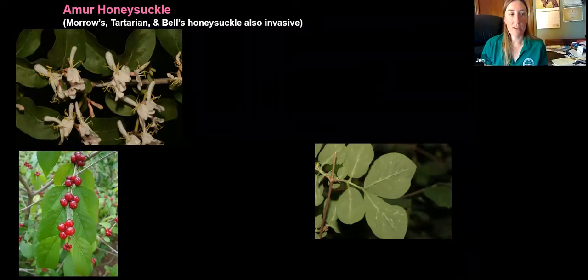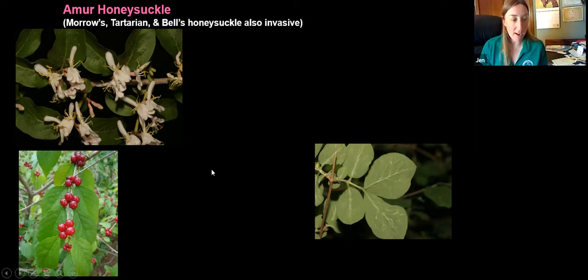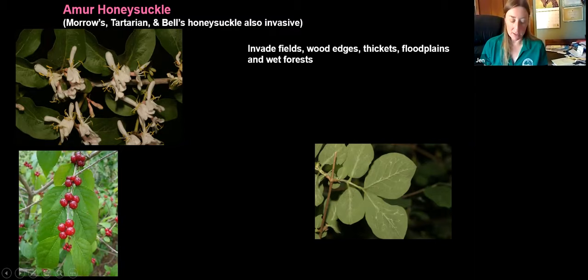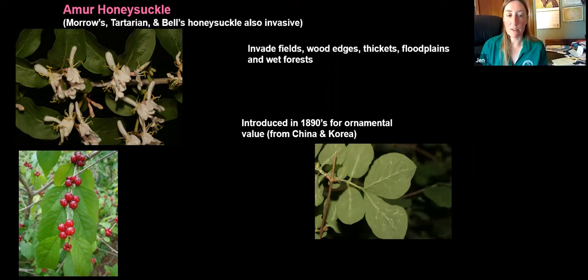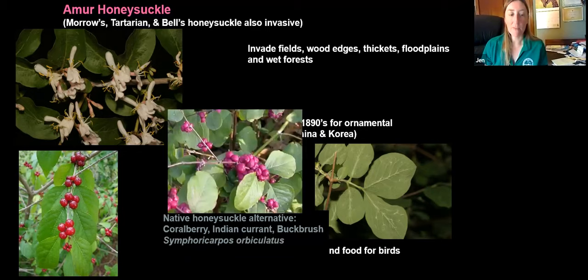Next is Amur honeysuckle as well as the other bush honeysuckles — all exotic. They have opposite leaves with white or pale pink flowers that eventually turn yellow as they age, and clusters of red berries along the center of the stems. They can invade fields, woodland edges, thickets, and sometimes wet forests, and very quickly reduce seedling establishment of our native plants. They were introduced in the 1890s for ornamental value, coming from China and Korea, and were promoted as shelter and food for birds. A good native alternative is coral berry or Indian currant, which has beautiful magenta berries that form in the center of the twigs.